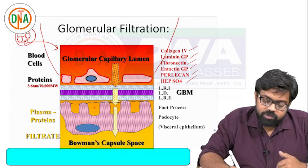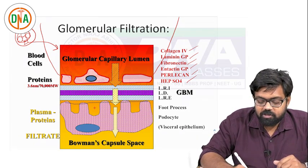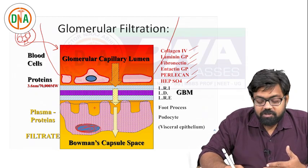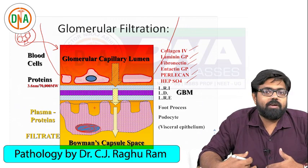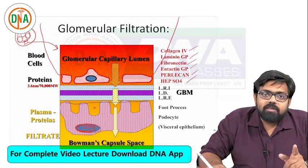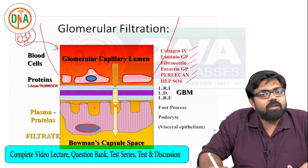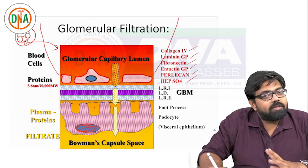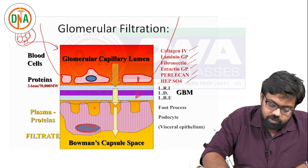Outside the basement membrane you come across the visceral epithelial cell, also called a podocyte, which has foot processes. Outside the visceral epithelial cell is the urinary space or Bowman's space where urine is filtered. After which you have the parietal epithelial cell. Importantly, the parietal cell has nothing to do with the filtration barrier. The filtration barrier is formed by only three structures: endothelial cell, basement membrane, and visceral epithelial cell.